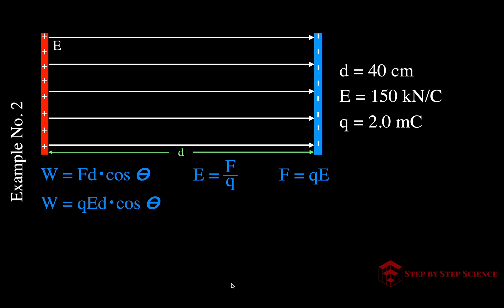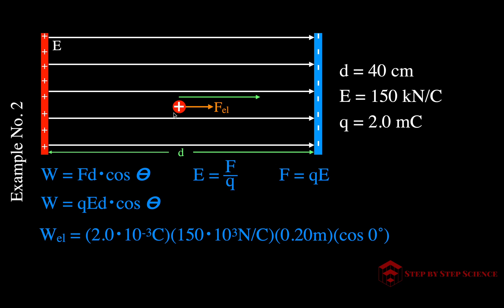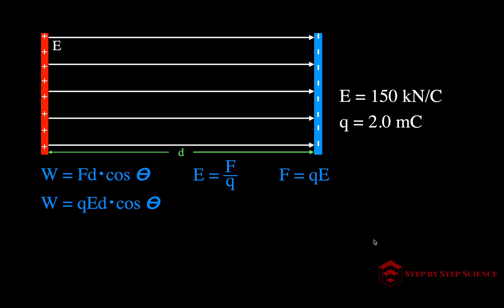For example number two, we switch to a positive charge and simply let it go. It moves in the direction of the electric field force. Using the same values — same charge magnitude, same field, same distance — and the angle between the force and displacement is 0 degrees, cosine of 0 is 1, and the electric field does 60 joules of work on the particle. Be careful to identify which force — external or field — you're calculating work for.